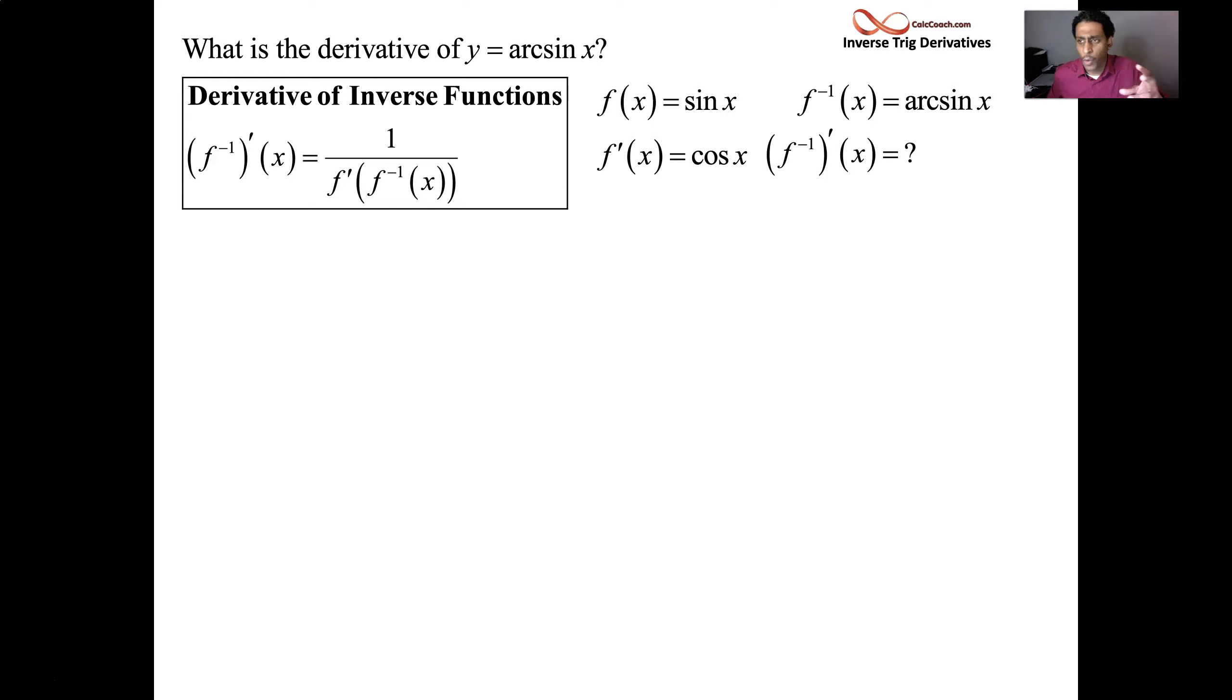It tells you how to find the derivative of an inverse. It says take the reciprocal. Take 1 over the original function's derivative, but have that guy evaluated at the inverse function. So we take 1 over the cosine, not of x, but the cosine of the arc sine. We have to figure out what that is.